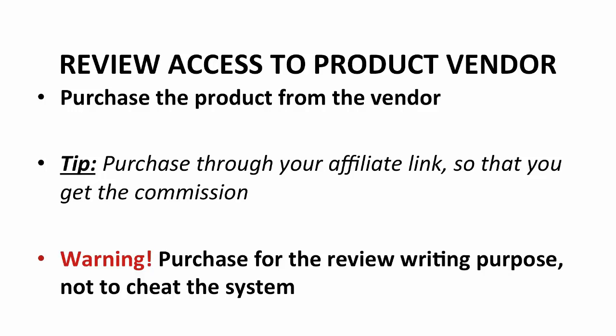First things first, you need to get review access from the product vendor. Before you can start writing, you need to understand the product. Put yourself in the prospect's shoes, so that you can understand what the demand from them is. You can make the purchase through your own affiliate link, so that you can get the commission from the copy you sell to yourself. However, do not do this for the purpose of cheating the system — it is for the review writing purpose. Most of the time, though, you can get review access from the product vendor for free.